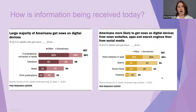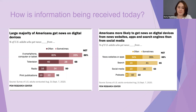Here we have some graphs showing how information is being received today. On the left, we see that Americans are receiving news from digital devices — smartphones, computers, or tablets — at the highest percentage, followed by television in second, radio in third, and print publications in fourth. On the right, they're most likely getting their news from a news website or app, with search engines second, social media a close third, and podcasts in fourth.